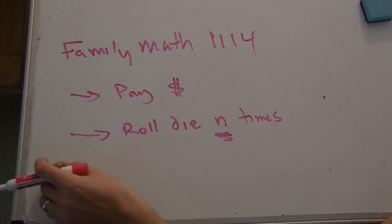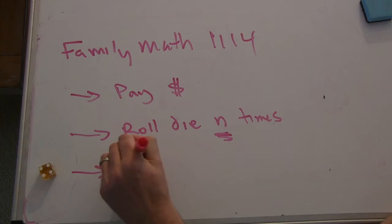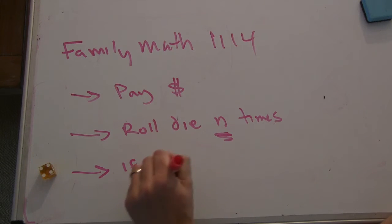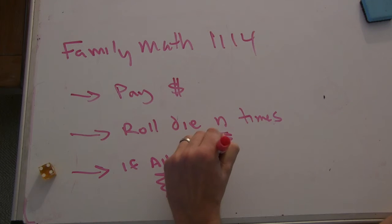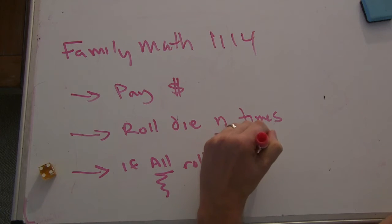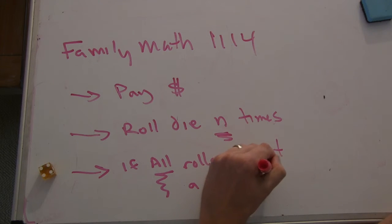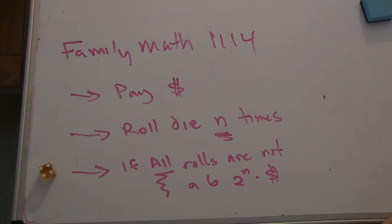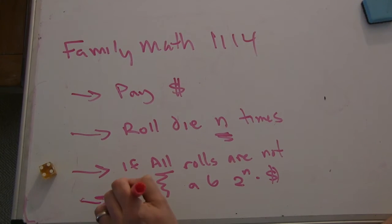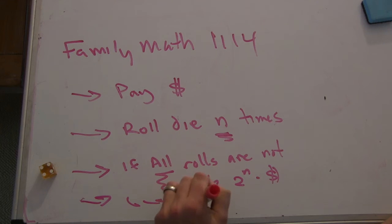So if all rolls are not a 6, you get 2 to the n times your dollars back. If you get a 6, it means zero. So you lose what you pay.